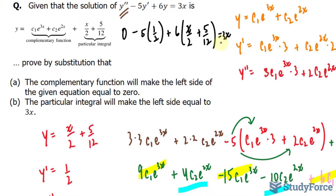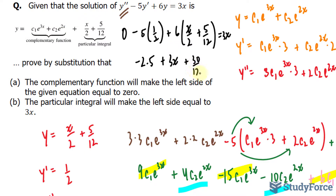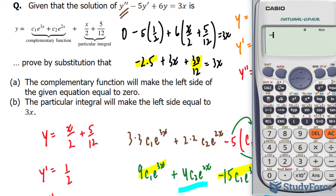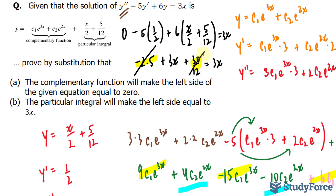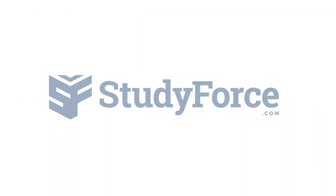Negative 5 times 1/2 is negative 2.5. 6 times x over 2 is 3x. And 6 times 5 over 12 is 30 over 12. The constant terms are negative 2.5 plus 30 over 12 — using a calculator, that gives us 0. Therefore, we have 3x equals 3x. And that is how to prove the complementary function and the particular integral of a differential equation.